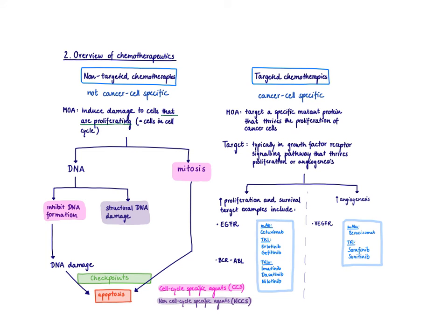The last concept to introduce is cell cycle-specific agents versus non-cell cycle-specific agents. When you interfere with the cell cycle, you could do this in a specific phase — for example in S phase when DNA formation happens, or in M phase where mitosis occurs — and you would call that a cell cycle-specific agent. In contrast, if a drug causes severe structural damage to existing DNA, it works in any phase of the cell cycle, so we call these drugs non-cell cycle-specific agents. This concludes the introduction to cancer chemotherapies.